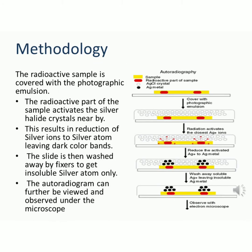Methodology: The radioactive sample is covered with the photographic emulsion. The radioactive part of the sample activates the silver halide crystals nearby. This results in reduction of silver ions to silver atoms, leaving dark color bands. The slide is then washed away by fixers to get insoluble silver atoms only. The autoradiogram can further be viewed and observed under the microscope.